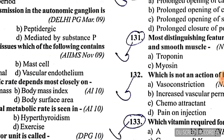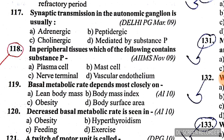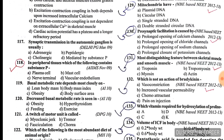Question 118: which peripheral tissue contains substance P cells? The answer is C, nerve terminals. Option C is correct — substance P is found at nerve terminals.